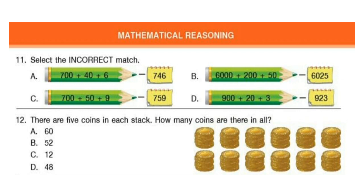Next section is mathematical reasoning. Question 11. Select the incorrect match. The correct answer is option B. Here 6250 is written on the pencil but 6025 is not right — this is the incorrect match.